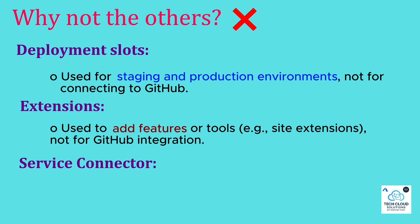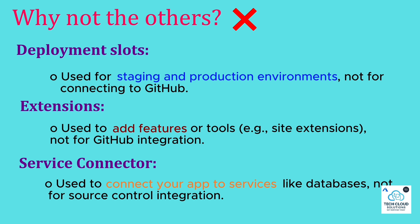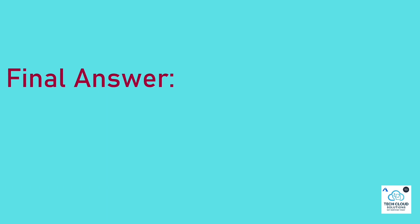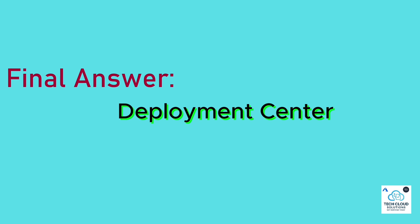Service Connector — used to connect your app to services like databases, not for source control integration. Extensions — used to add features or tools like site extensions, not for GitHub integration. Final answer: Deployment Center.